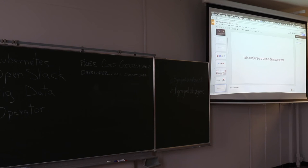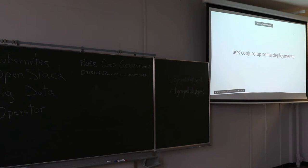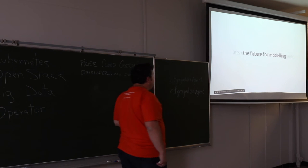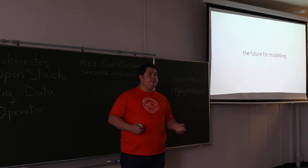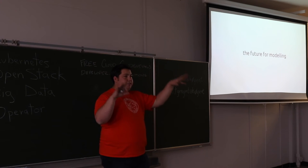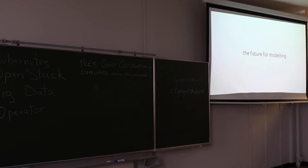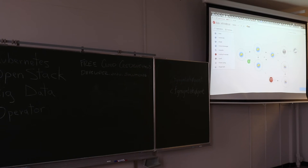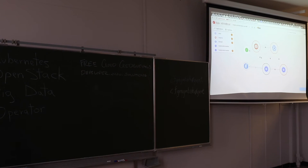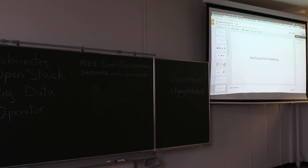At a high level, that's what Juju provides. We'll go much deeper into these concepts over the next two days. Juju provides core primitives: the ability to deploy, request compute resources, put operational code on machines, scale, relate and manipulate, and create distinct models of deployments. For example, I have here a Kubernetes model and a Big Data cluster — a set of components all interlinked and deployed. These are separate models, like namespaces, using the same control plane but different segmented namespaces.